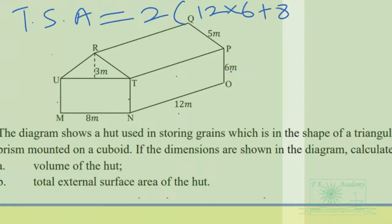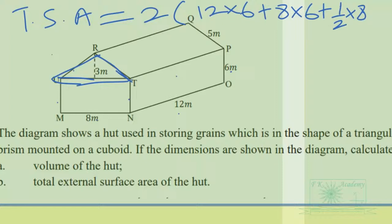We also have the triangular surfaces — two of them — with area half times base times height, where the base is 8 and the height is 3. Then we add the slant rectangular surface on the prism, of which there are two, giving 5 by 12.